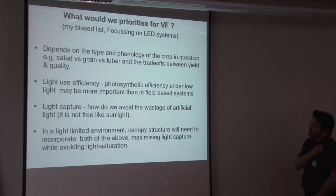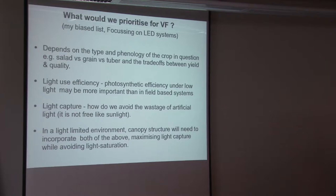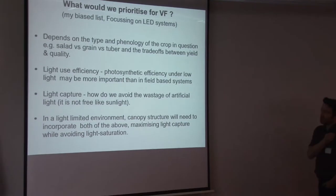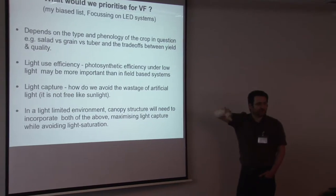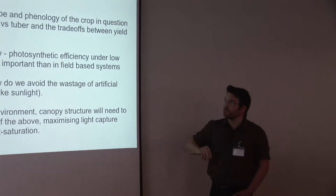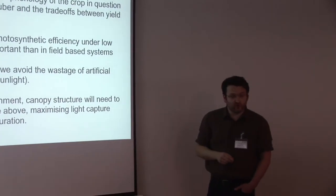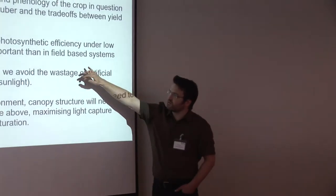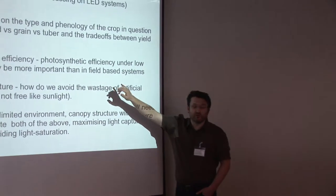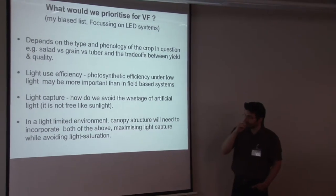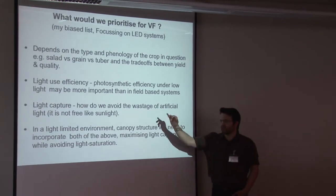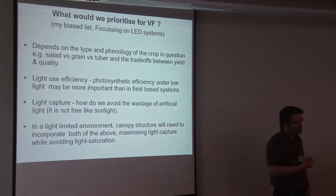So I think, you've probably heard this before actually, but prioritizing for vertical farming obviously depends on the type and phenology of the crop in question. Growing a rice or grain crop would be completely different to growing a salad crop. I think that photosynthetic efficiency under low light may be more important than in field systems, and that's something that I do study. Also light capture, how do you avoid the wastage of light?